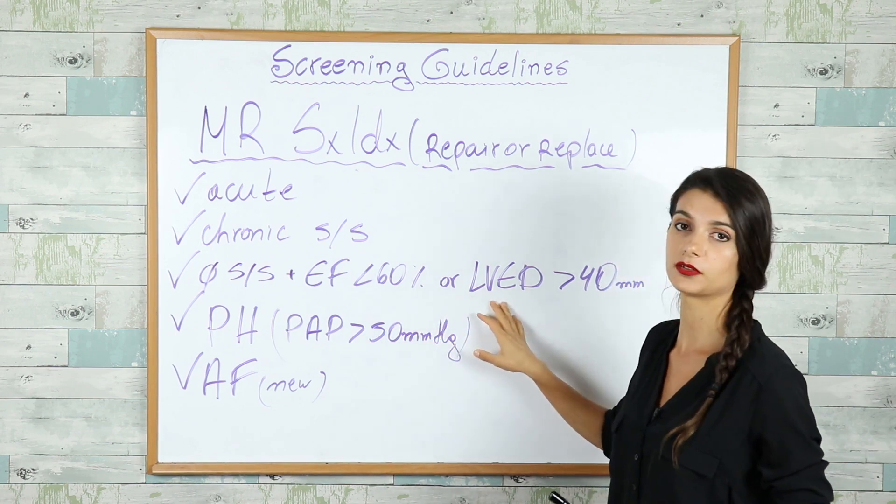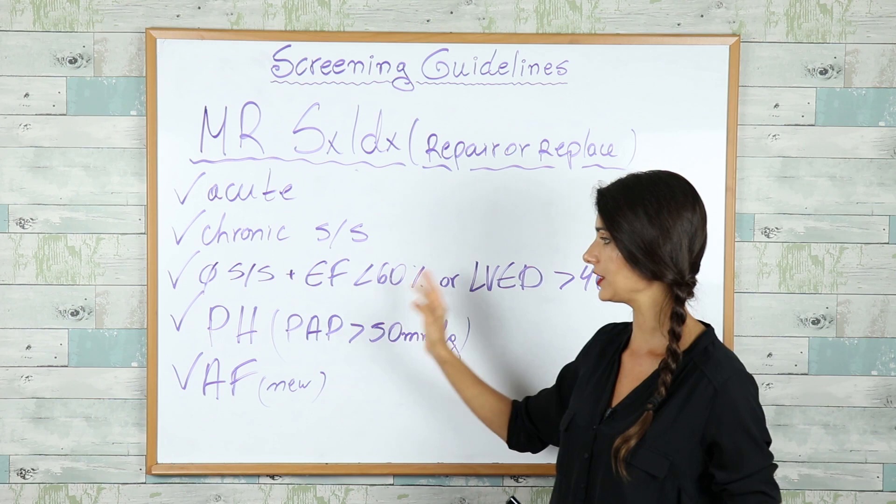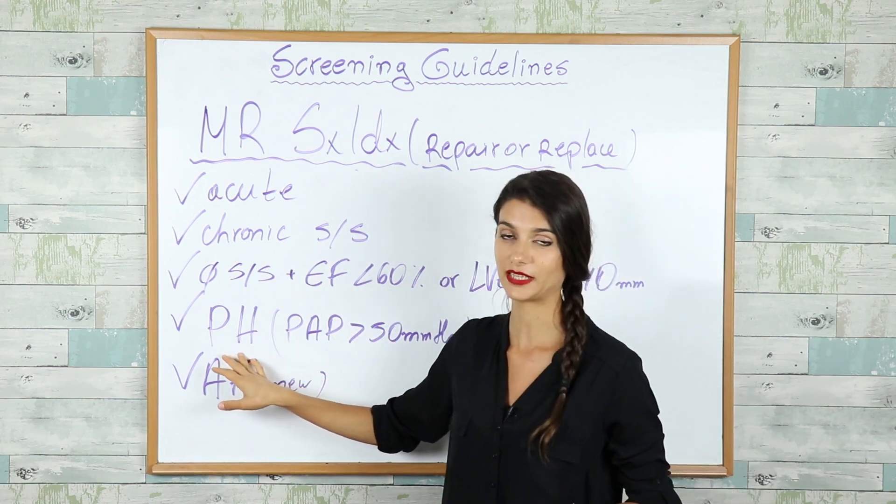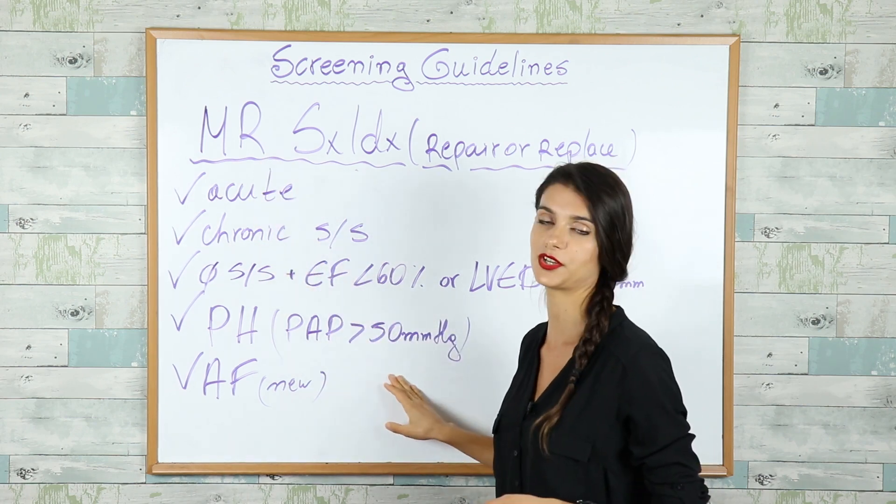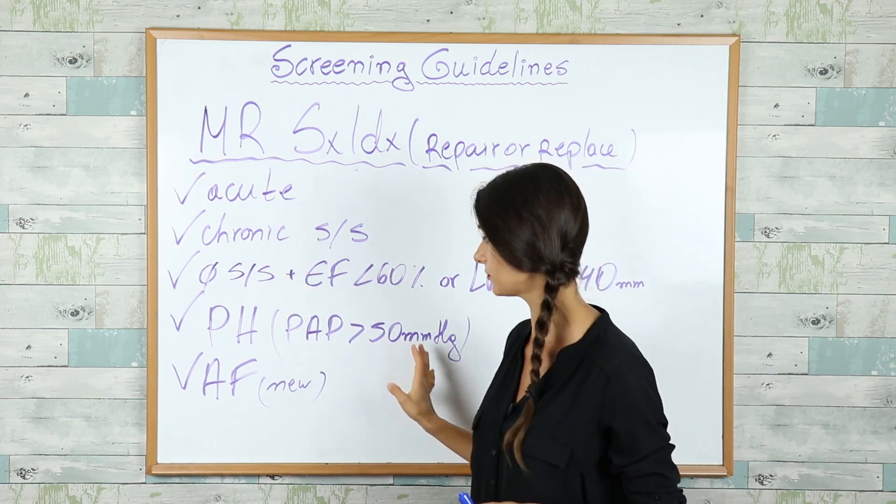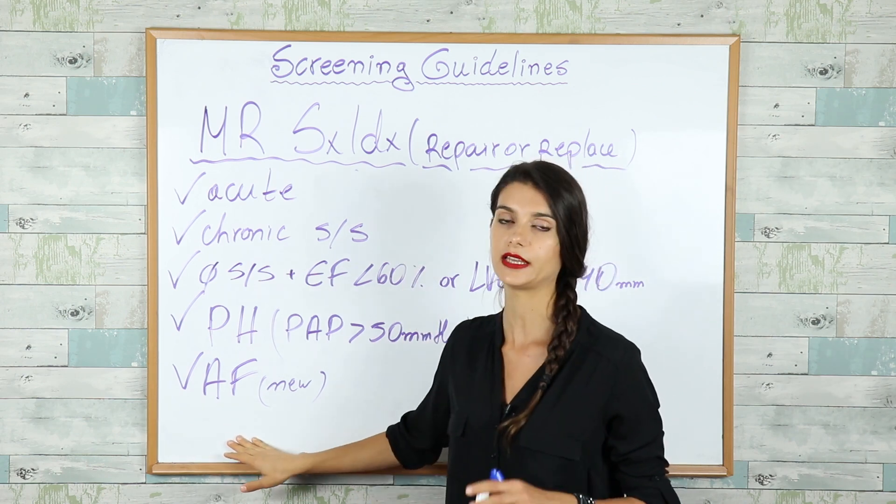but their left ventricle end-diastolic diameter is more than 40 millimeters, or if the patient is having pulmonary hypertension as a result of the mitral regurgitation with pulmonary artery pressure more than 50 millimeters of mercury, and if the patient with MR is having new onset atrial fibrillation.